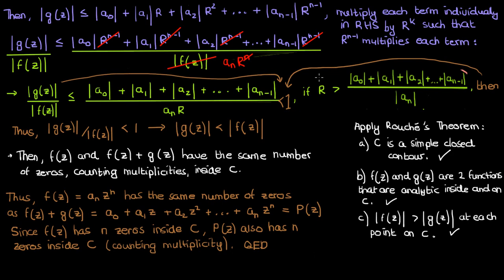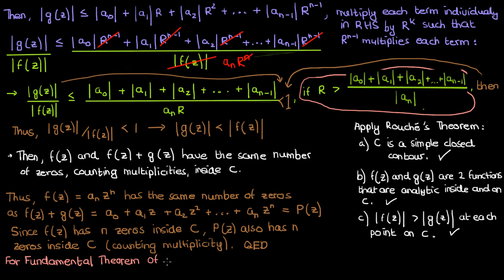Of course our proof is contingent on choosing a large enough contour C with a sufficiently large radius R to satisfy the modulus condition. However, this shouldn't be a problem — the fundamental theorem of algebra doesn't restrict us to a particular region in the complex plane when it comes to the roots. Pretty much the entirety of the complex plane is fair game, which is why we can be very liberal in how large we choose the contour C to be.